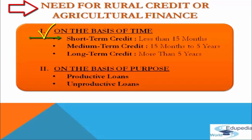The first category is short-term credit. It refers to credit taken for a period of less than 15 months to meet short-term needs. The loan is taken to purchase seeds, fertilizers, and for paying wages to hired workers. Such loans can be repaid out of the current income of farmers.